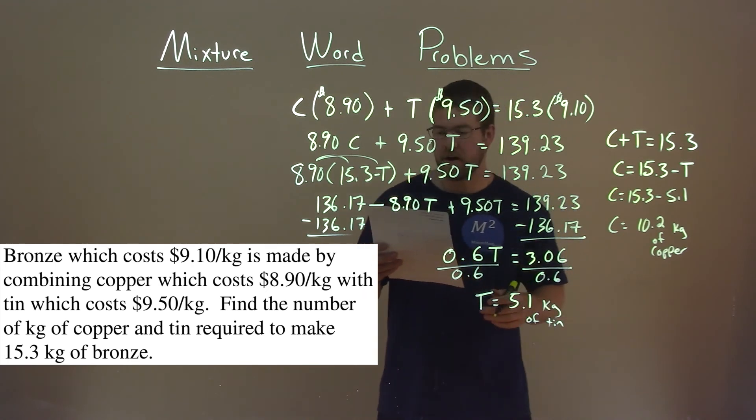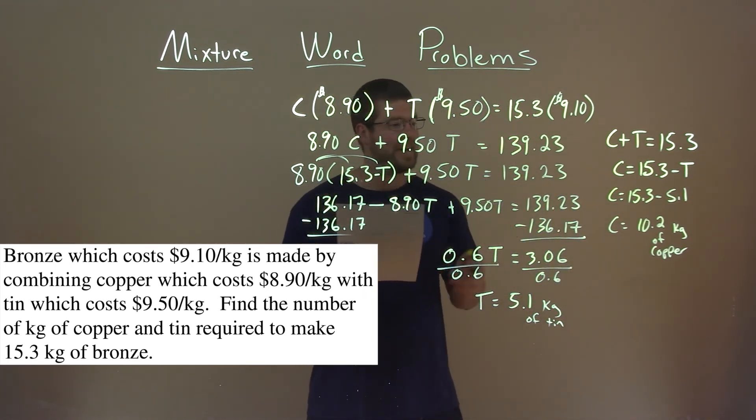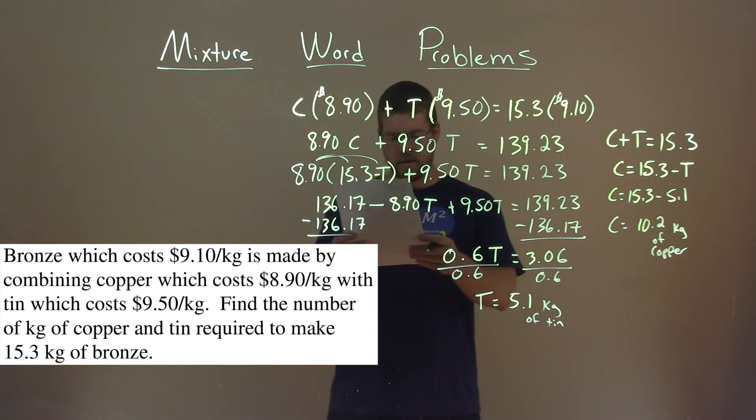So there we have our final answer: 5.1 kilograms of tin and 10.2 kilograms of copper.